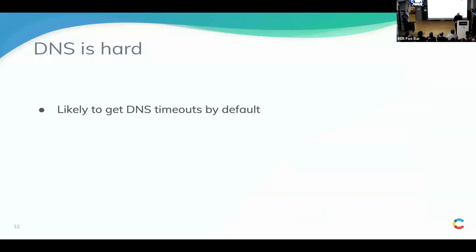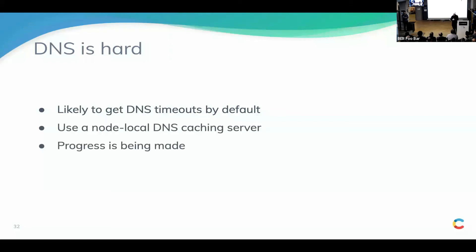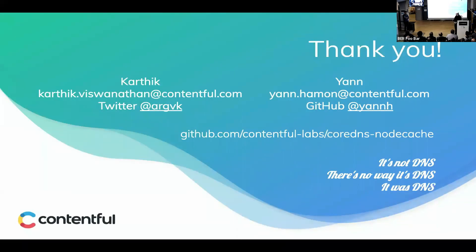So what did we learn? DNS is hard and when it fails, it's really sad — especially in Kubernetes, where by default you'll likely see timeouts unless you actually do something about it. Use a node-local DNS caching server, whether it's the one we built or the upstream project called node cache. There is progress — none of these solutions is officially generally available yet; node cache is still in beta, and ours is around the same state, though we've been using it in production for several months and it's pretty solid. Check out CoreDNS node cache and talk to us about DNS problems. Thank you.